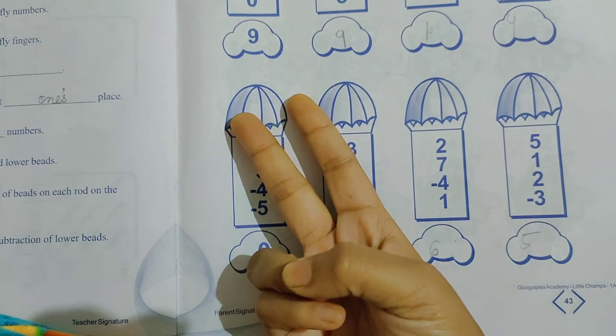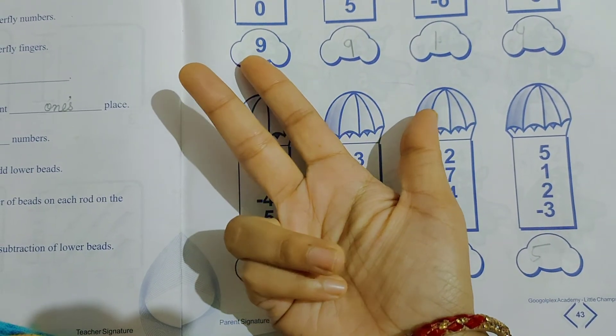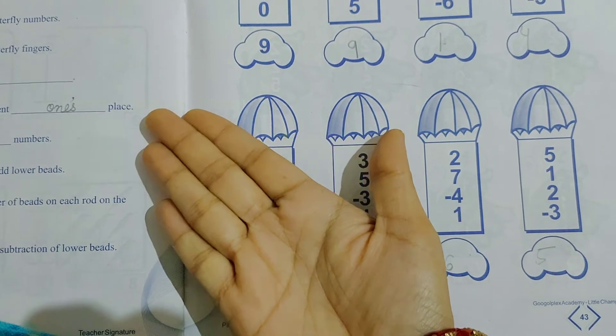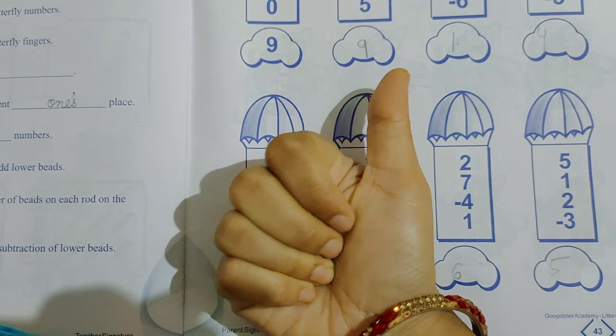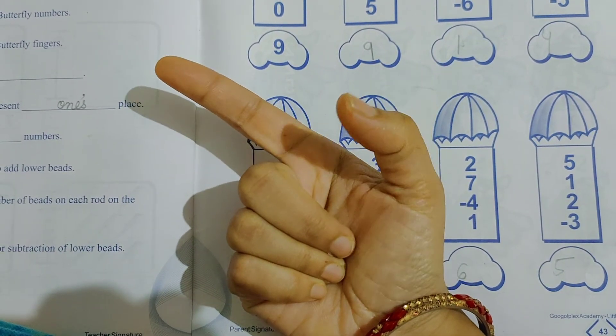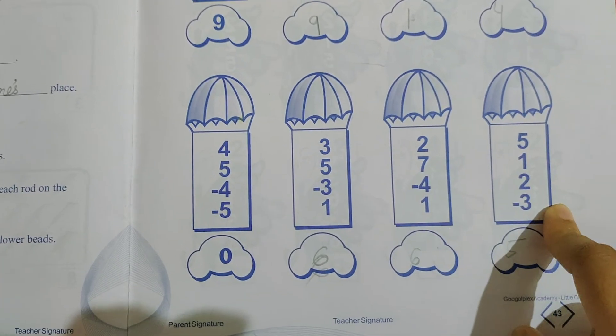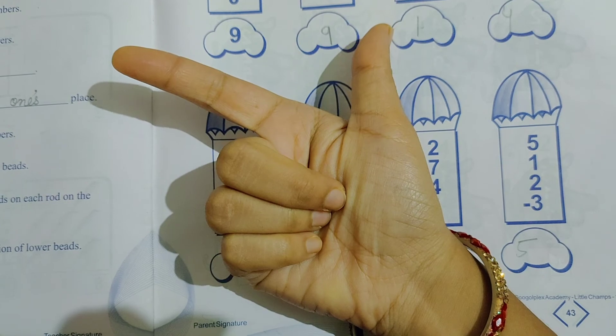Next 2 plus 7. 7 kaise hota hai? 5, 6, 7. Now minus 4. 4 fingers we have to close. Now plus 1. One finger we have to open. Answer is 5, 6. Next question 5. Plus 1. Plus 2.